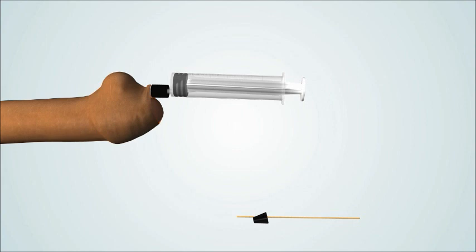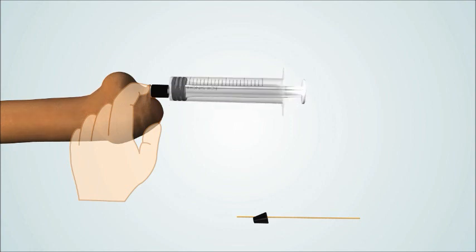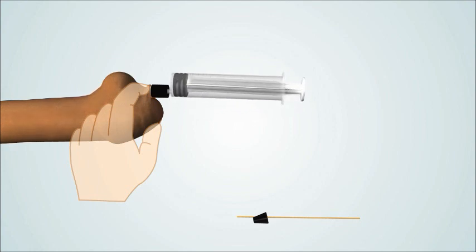Once inflated to the desired pressure, hold the balloon in place under the foreskin and twist the neck of the balloon three times by turning the NovoGland device and air plunger. This will seal the air in the balloon to allow you to remove the air plunger.